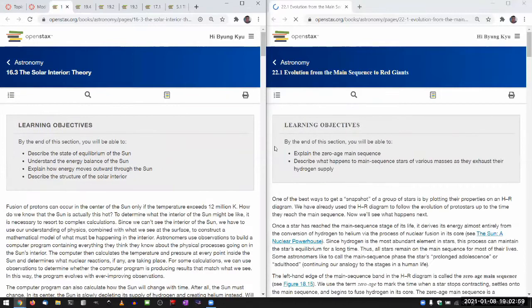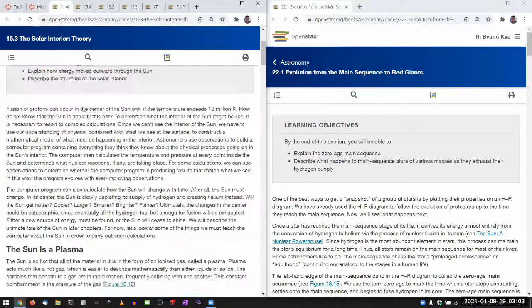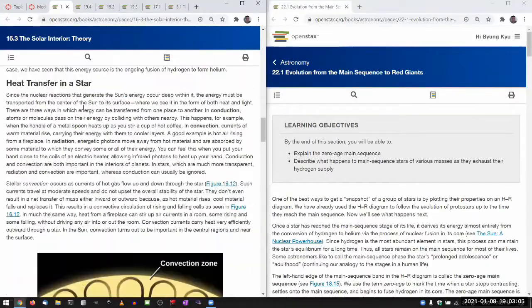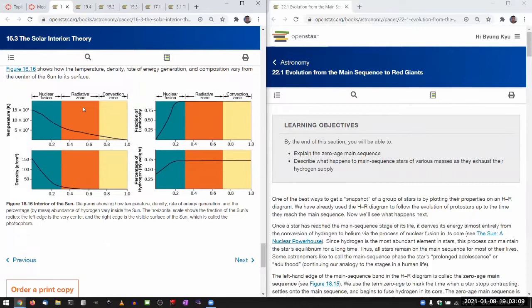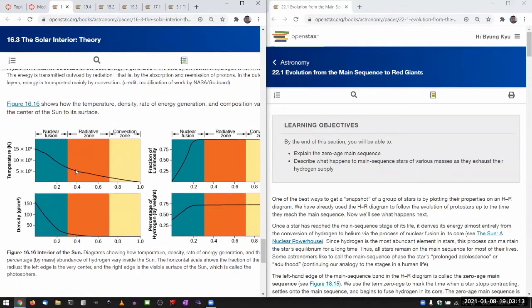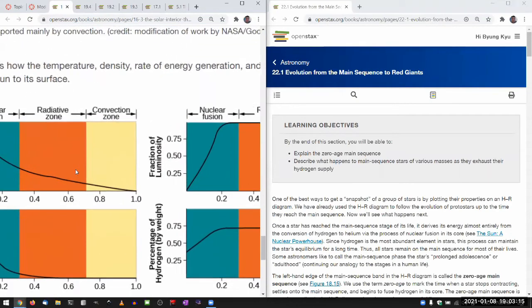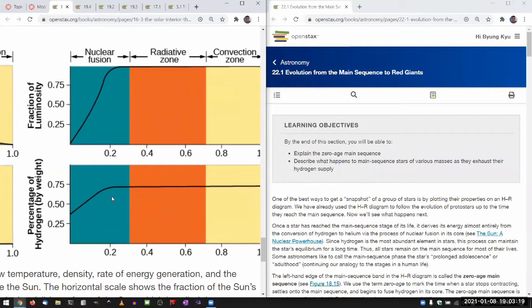A connection between these two figures, which is in this solar interior theory, at the very end they have a plot of a chart that tells you how the material is distributed around the sun. And what I think is interesting here is this percentage of hydrogen by weight.